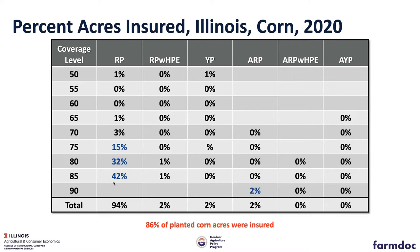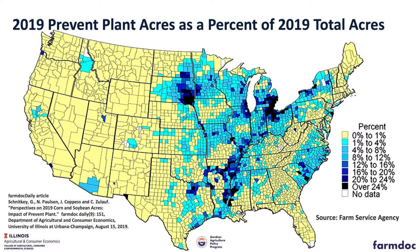Last year the story was prevent plant. This map shows prevent plant as a percent of total acres. We had some large prevent plant areas, particularly in northern and central Illinois and southern Illinois. In the middle part of the state we didn't have large prevent plant acres. In certain areas, 20 to 24 percent of the acres were taken as prevent plant — it's a regional perspective.